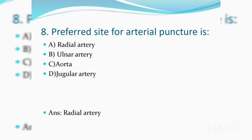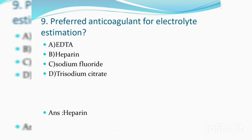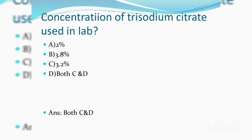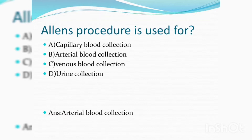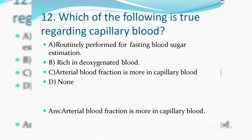The preferred site for arterial puncture is the radial artery. The preferred anticoagulant for electrolyte estimation is heparin. The concentration of dry sodium citrate used in the lab is 3.8% and 3.2%. Allen's procedure is used for arterial blood collection.